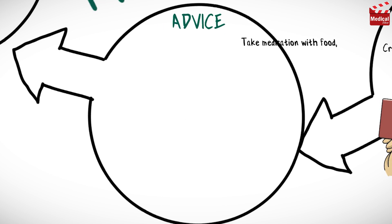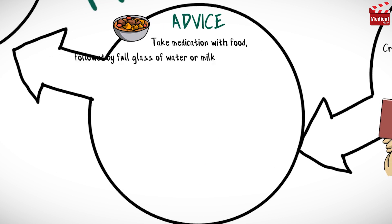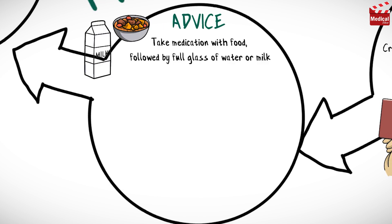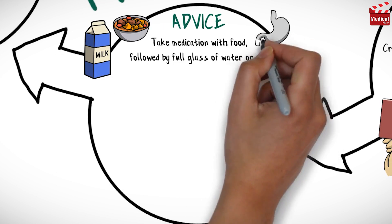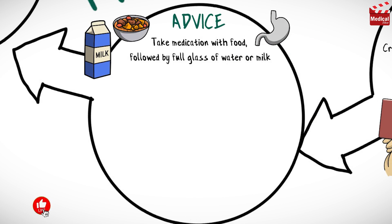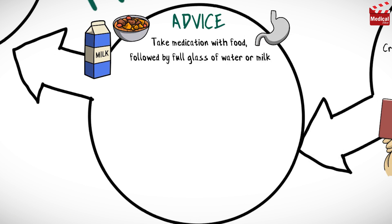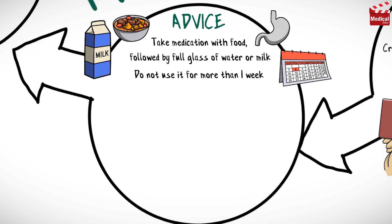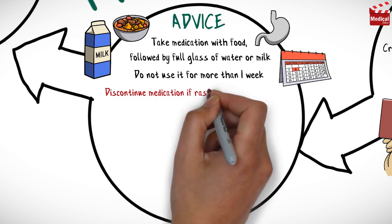Mefenamic acid should be administered with meals followed by a full glass of water or milk to avoid gastrointestinal and esophageal irritation. It may be given with antacids if stomach upset occurs. Do not use it for more than one week. If given for dysmenorrhea, begin taking the medication with the onset of bleeding and associated symptoms.